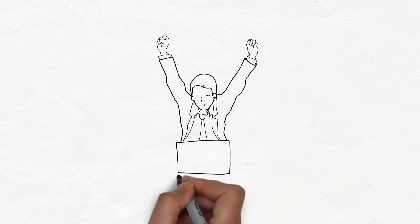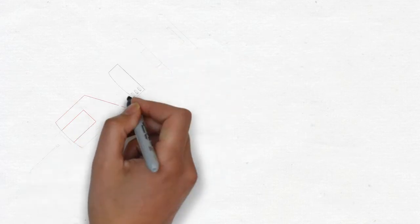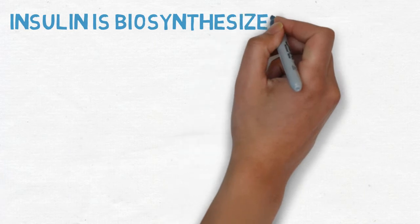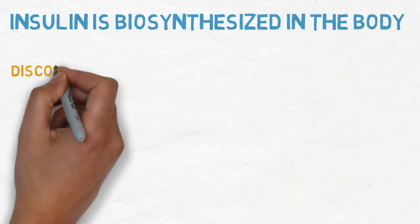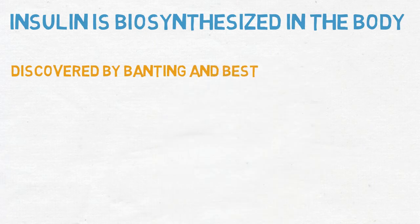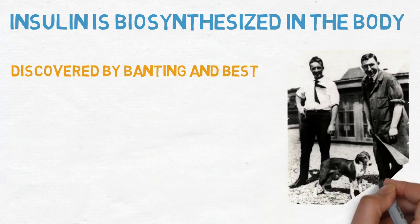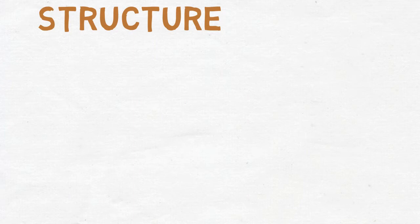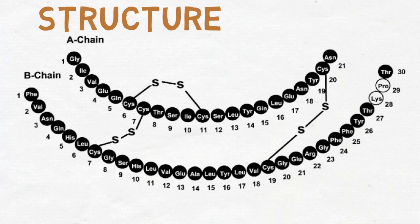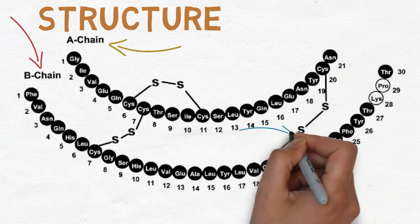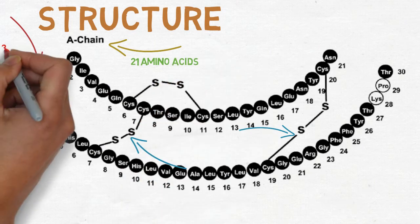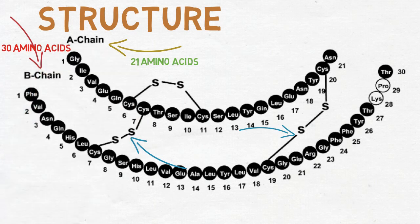Now that we have a brief idea about diabetes, we can talk about insulin and its role in the body. Insulin is a phenomenal hormone that is biosynthesized in the body. It was discovered in 1921 by Banting and Best when they successfully extracted insulin from a dog's pancreas. Insulin is a protein which consists of an A chain and a B chain, linked by two disulfide bonds. Chain A consists of 21 amino acids, whereas chain B consists of 30 amino acids.